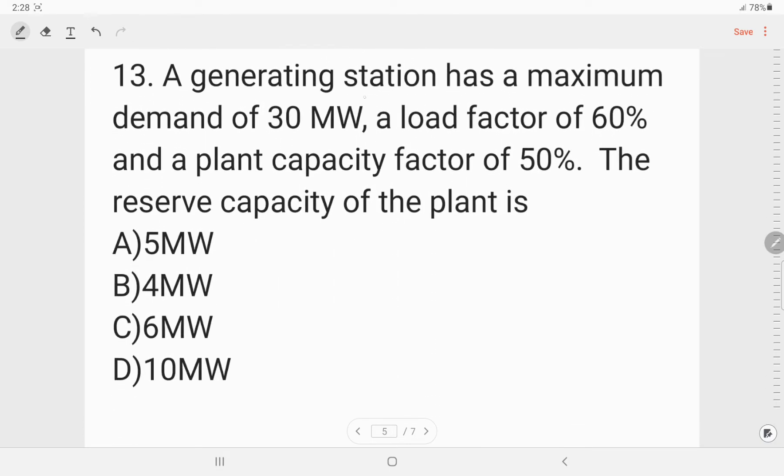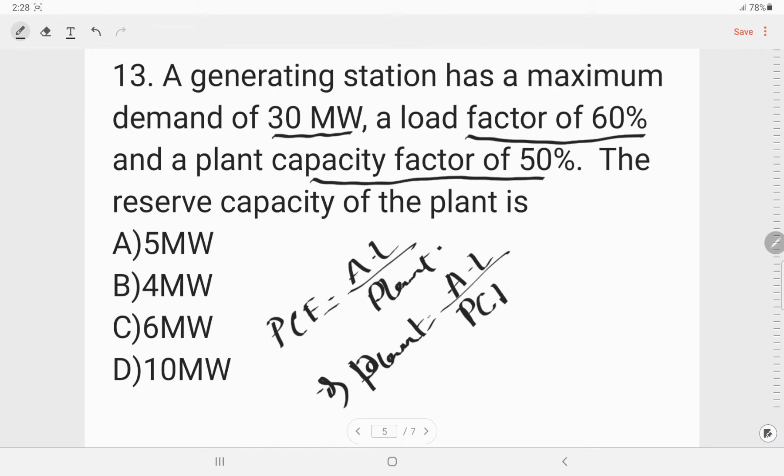Next, a generating station has a maximum demand of 30 megawatt, a load factor of 60 percent, a plant capacity factor of 50 percent. The reserve capacity of the plant is, so first we need to find out the plant capacity. We know that plant capacity factor is average load by the plant capacity. So plant capacity we can write it as average load by plant capacity factor.